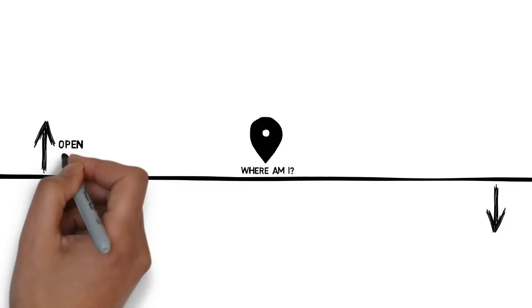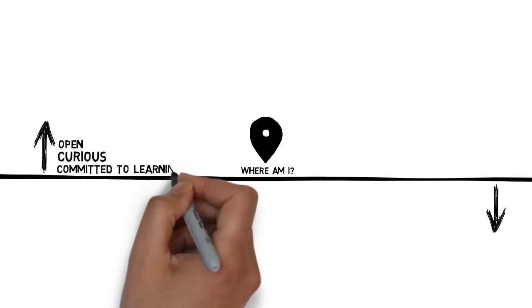If we are above the line, we are open, curious, and committed to learning. If we are below the line, we are closed, defensive, and committed to being right.